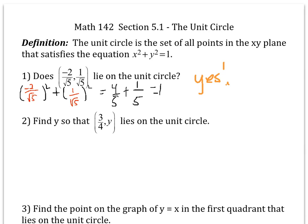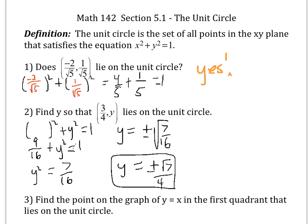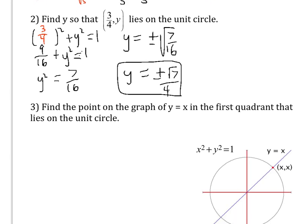The next problem says: find the value of y so this point lies on the unit circle. There are two answers. When you plug in the x-coordinate 3/4 and square it, you get 9/16. When you solve for y, you get plus or minus the square root of 7 over 4. That means there are two points — one in the first quadrant and one in the fourth quadrant.